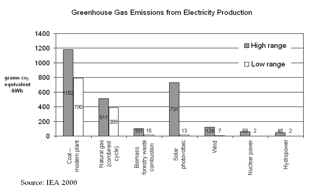The IPCC Fifth Assessment Report emphasizes that behavior, lifestyle, and cultural change have a high mitigation potential in some sectors, particularly when complementing technological and structural change. In general, higher consumption lifestyles have a greater environmental impact. Several scientific studies have shown that when people — especially those living in developed countries — wish to reduce their carbon footprint, there are four key high-impact actions they can take: 1. Not having an additional child (58.6 tons CO2-equivalent per year). 2. Living car-free (2.4 tons CO2). 3. Avoiding one round-trip transatlantic flight (1.6 tons). 4. Eating a plant-based diet (0.8 tons).